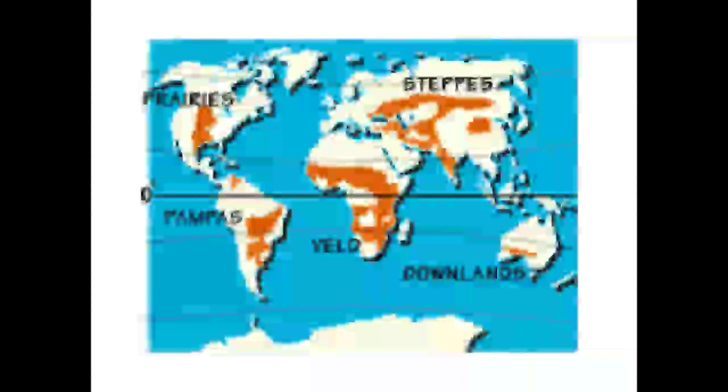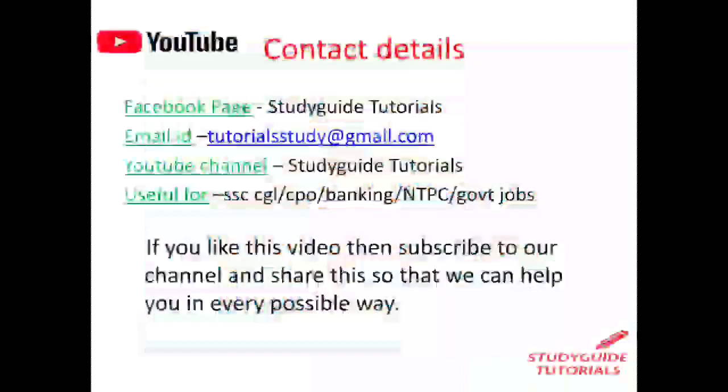You can see Antarctica on the map — there is no grassland there because it is a total snow-covered area, and therefore no grassland exists.